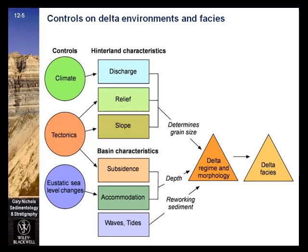The main controls on delta environment and phases are climate, tectonics, and eustatic sea level changes. Hinterland characteristics include discharge, relief, and slope. Basin characteristics include subsidence, accommodation, waves, and tides.